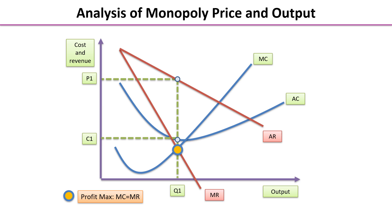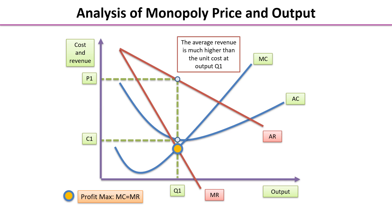We're comparing P1 as the average revenue, or revenue per unit, and C1 as the average cost per unit. The vertical difference between C1 and P1 is the profit per unit. We then multiply that by the number of units sold, which is Q1, to get the supernormal profit earned by this monopolist.